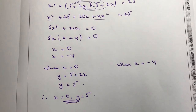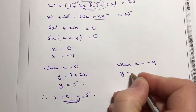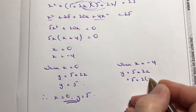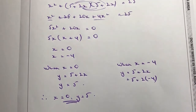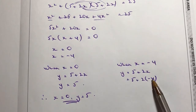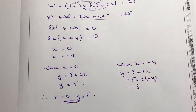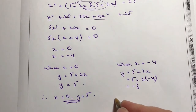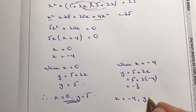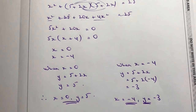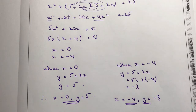So x = 0, y = 5 is the first answer. When x = -4: y = 5 + 2(-4) = 5 - 8 = -3. So x = -4, y = -3 is the second answer. My initial sketch wasn't quite right, but now I've got a good algebraic solution to this pair of simultaneous equations.